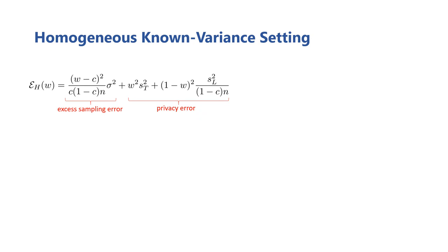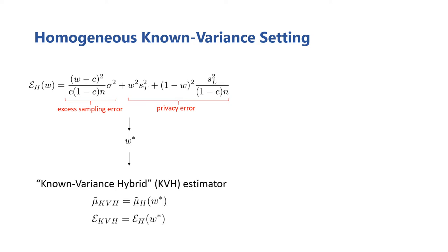In this homogeneous known variance setting, the error expression for the hybrid family becomes much simpler and contains only known terms, so we can optimize it directly to find a weighting that minimizes it. We call the resulting estimator that uses this weighting the known variance hybrid estimator, or KVH estimator.